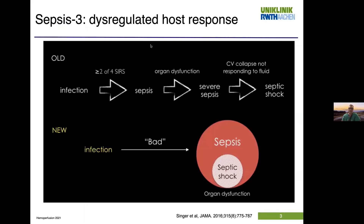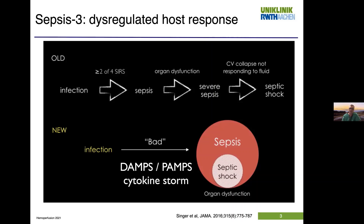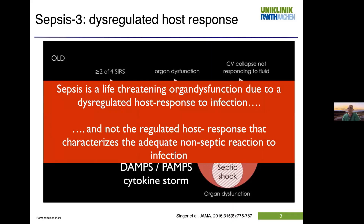Just to get everybody on the same page — what are we talking about? We're talking about septic patients. Sepsis-3 showed us that sepsis is the dysregulated host response. It means infection goes bad. When infection goes bad, you become septic and have organ dysfunction, and the subgroup in septic shock also have microvascular problems. What makes the infection go bad is the cytokine storm, the reaction to DAMPs and PAMPs. Sepsis is the life-threatening organ dysfunction due to dysregulated host response — not the regulated response that characterizes the adequate non-septic reaction.